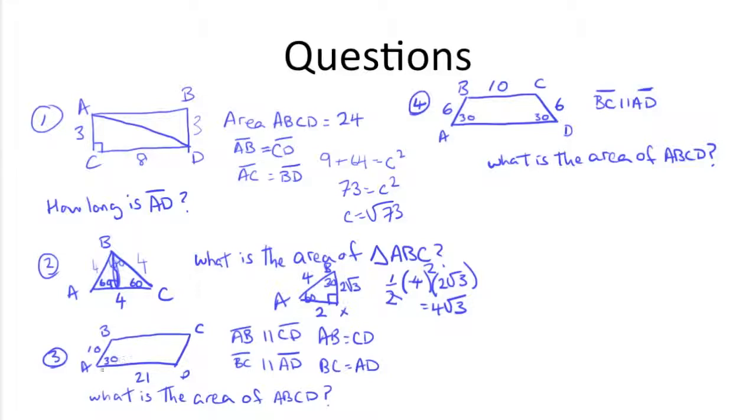Number 3, what is the area of ABCD? We know AB is parallel to CD, we know BC is parallel to AD, AB is equal to CD, and we know AD is equal to BC. Alright, well we know the area of a parallelogram is base times height, so we have base, 21. All we need to do is figure out the height.